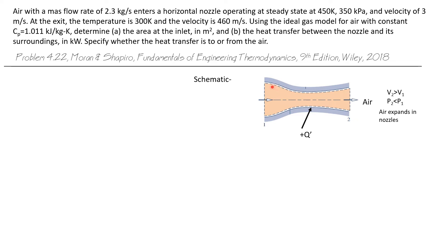The system will be the air molecules between the inlet and outlet contained within the nozzle. Let's look at the data given in the problem statement. The inlet temperature is 450 Kelvin, the inlet pressure is 350 kilopascals, which is 3.5 bar. The velocity is 3 meters per second, and the mass flow rate is 2.3 kilograms per second.